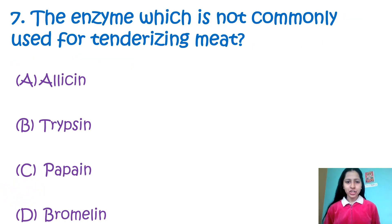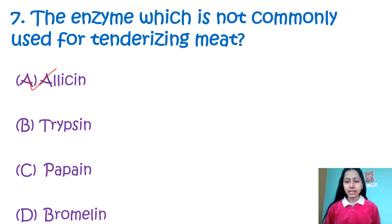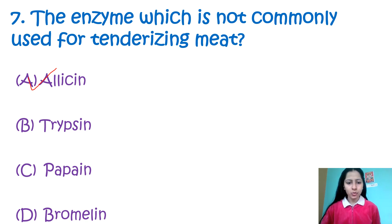Question number 7: Which enzyme is NOT commonly used for tenderizing of meat? Option A: allicin, Option B: trypsin, Option C: papain, Option D: bromelain. The enzyme not used in meat tenderization is option A — allicin. Allicin is actually an organo-sulphur compound mainly present in garlic. Whereas trypsin is an enzyme used to digest proteins, papain is obtained from papaya fruit, and bromelain from pineapple. So my correct answer is allicin, option number A.